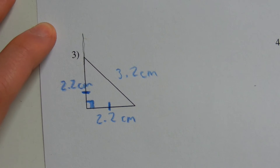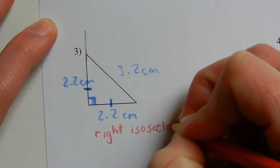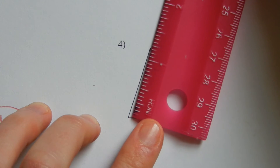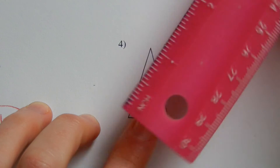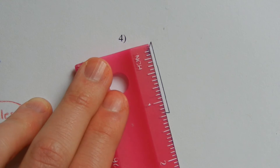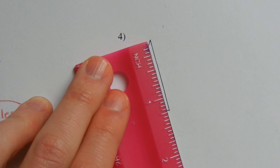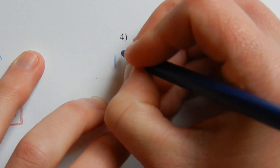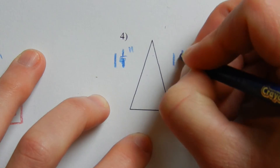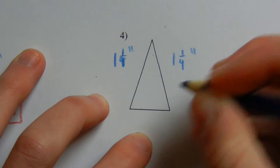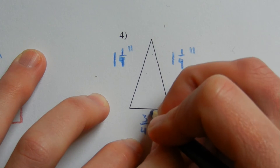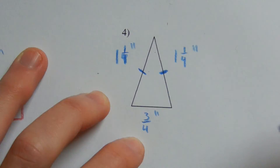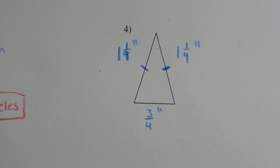For number four, switching over to inches, this side is approximately one and one-fourth, this side is also approximately one and one-fourth, and this side is about three-fourths. We have one and one-fourth, one and one-fourth, and three-fourths of an inch. These two sides — one and one-fourth — have equal measure, therefore they're congruent. Since those two sides are of equal length, we know this is an isosceles triangle.